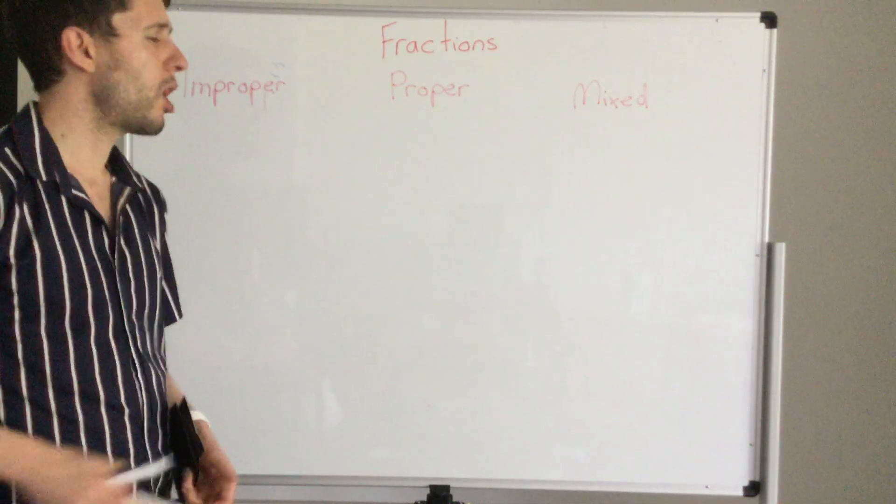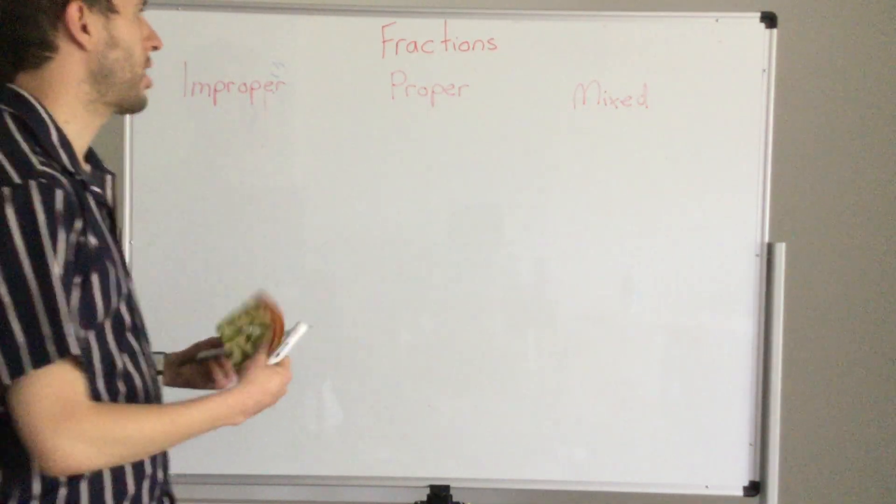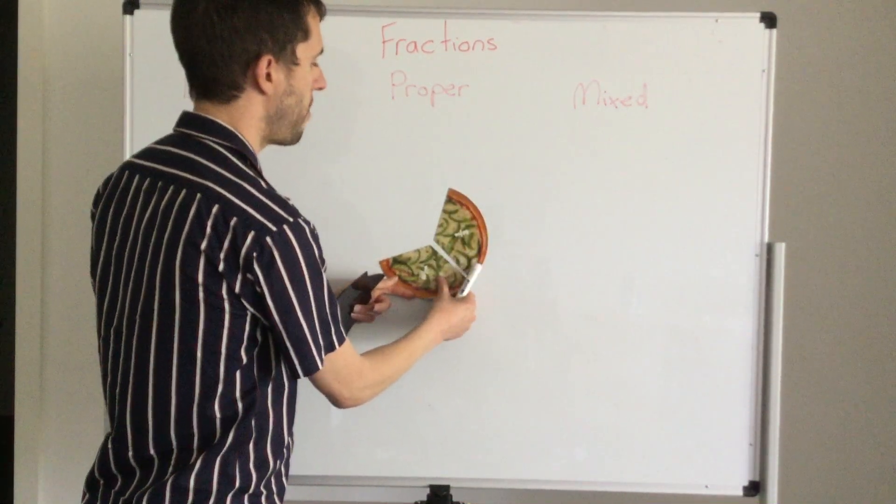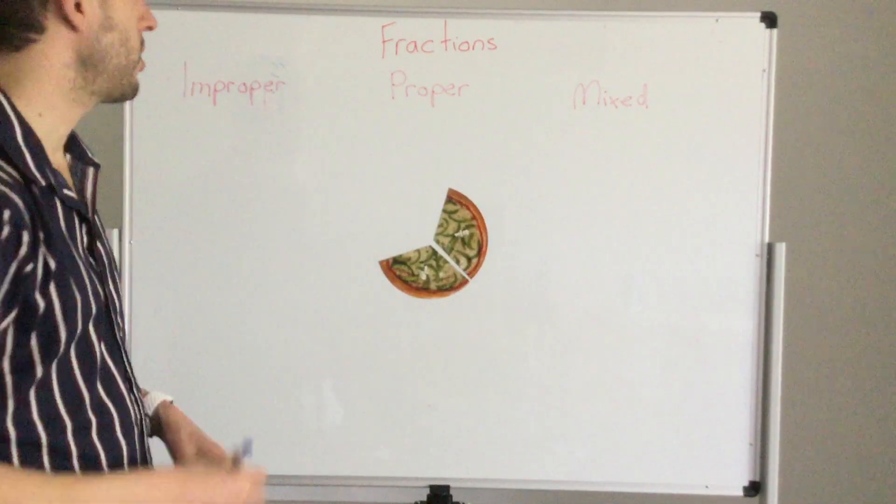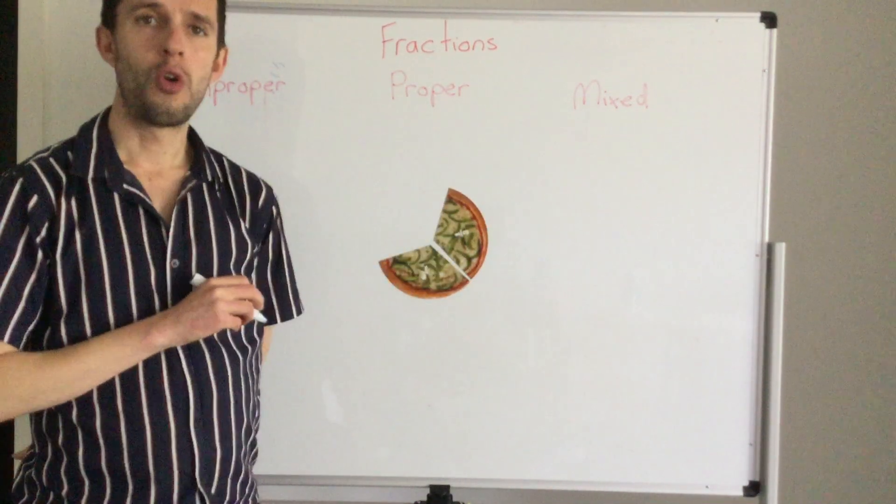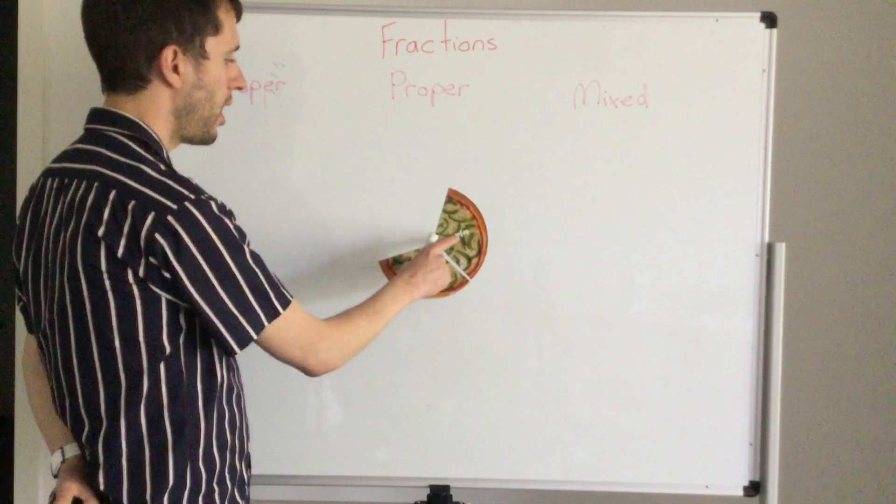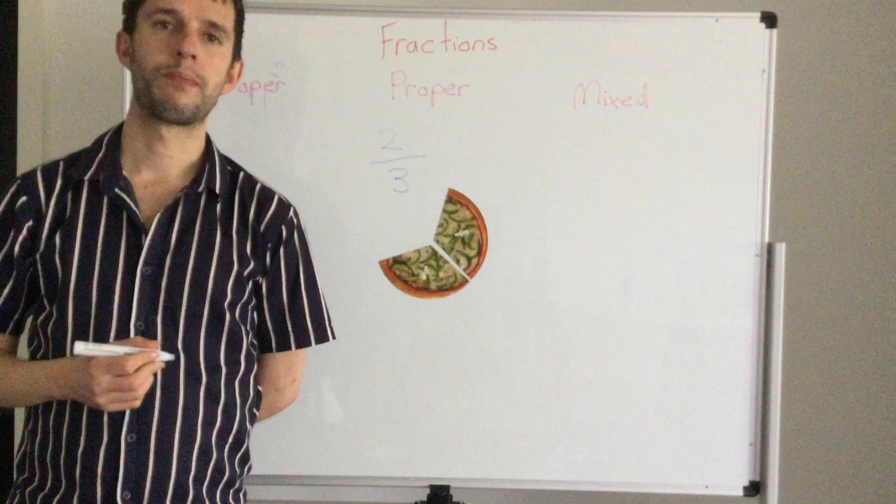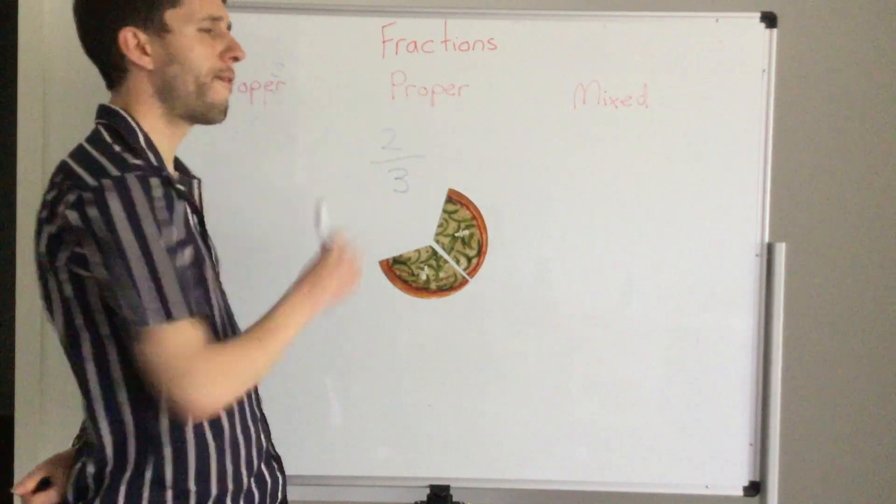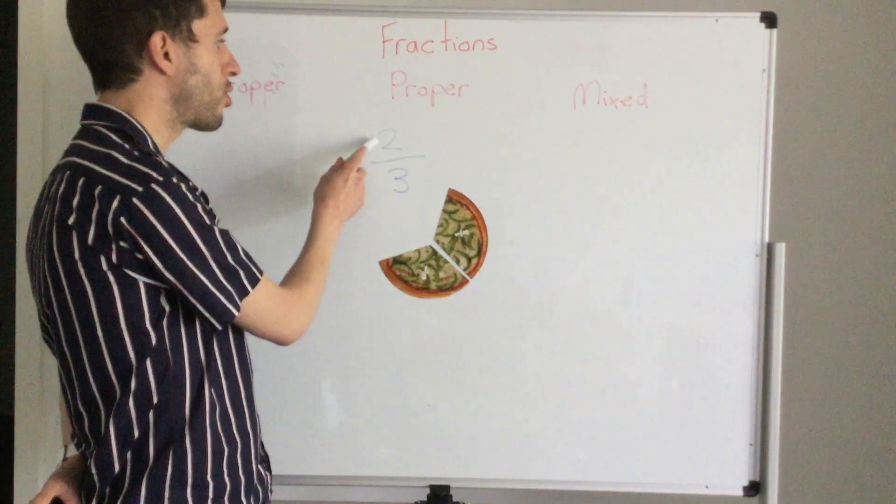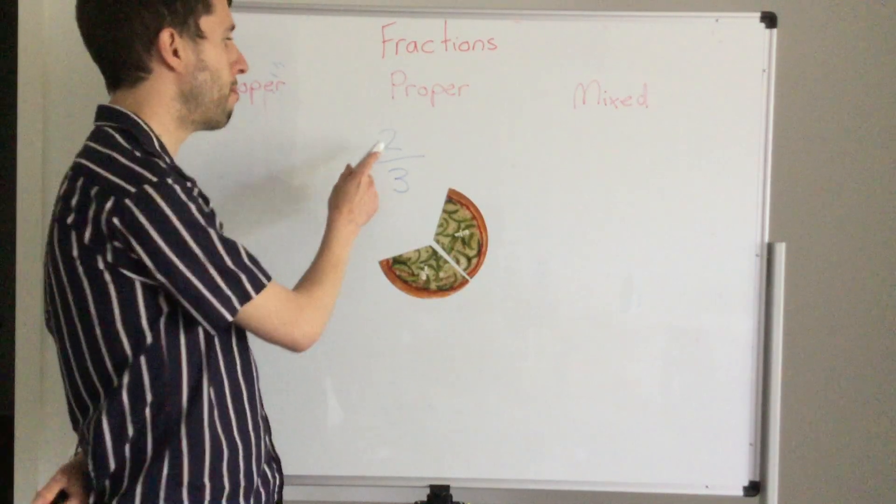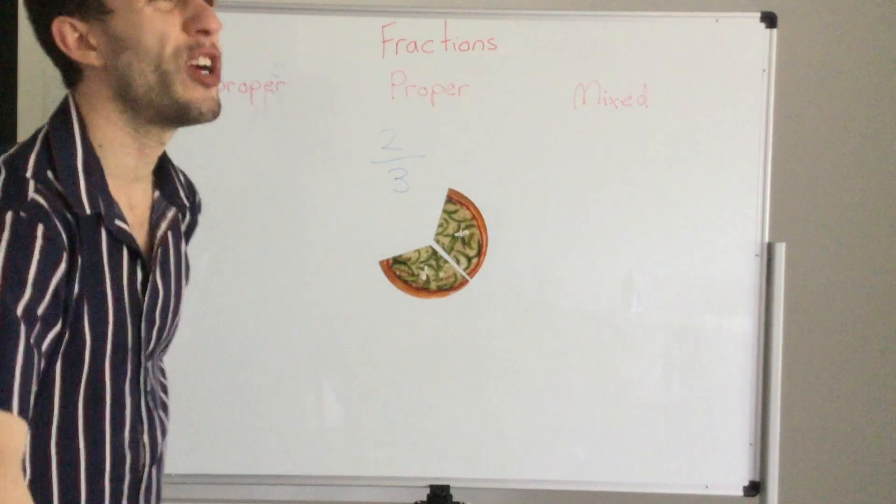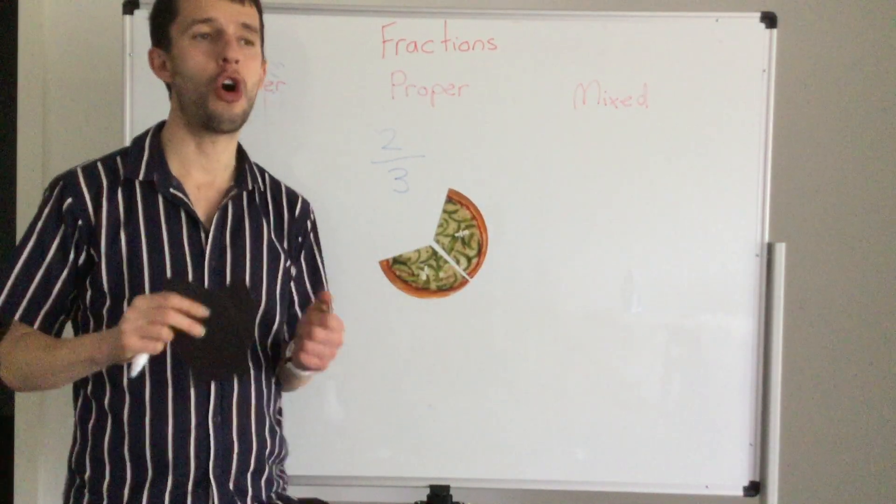So we are going to be looking at a proper fraction. The first thing I would like you to think about with a proper fraction is looking at this picture right here. I've got two pieces out of three. A proper fraction is where our top number is smaller than the bottom number. So we don't have a whole. We have less than a whole.